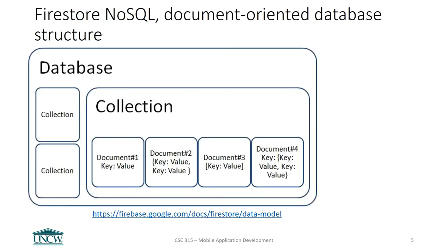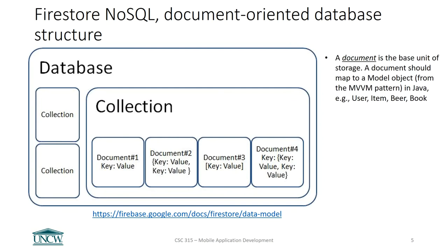So some terminology. The Google Cloud Firestore, which is the database we're going to use, is a document-oriented database. The document is the basic unit of storage, and you should think of a document as one of the model objects in your model-view-viewmodel pattern. A single document is a single instance of, say, a user object, an item for sale object, a beer object, or a book. What it actually is, is just the data — the strings and integers that comprise that object — stored in what is called a document.